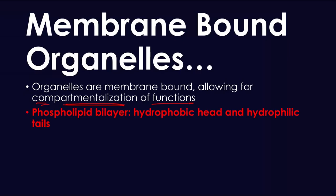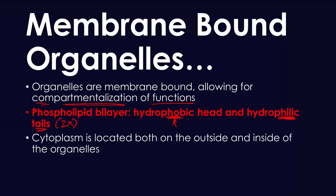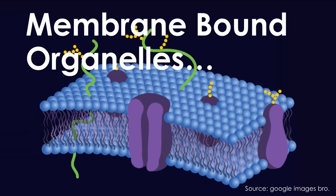These organelles are bound by something called a phospholipid bilayer. You have a hydrophobic head which repels water, and then you have hydrophilic tails — two of them — that attract water, and together they create a phospholipid bilayer. The cytoplasm is located both within and outside of organelles. This is what the phospholipid bilayer membrane looks like.